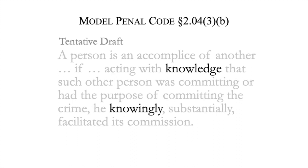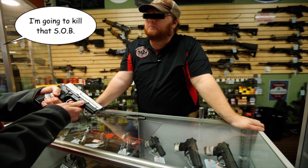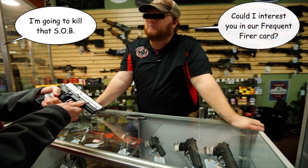Knowledge, not purpose. There was an uproar when the tentative draft came up for debate in the American Law Institute. It seemed to a number of members that knowledge set the bar too low. The sales clerk portrayed here might be convictable of murder as an accessory under the tentative draft, despite the likely fact that the clerk was indifferent as to what the buyer did — and would be convictable even if he would rather the buyer didn't commit homicide.